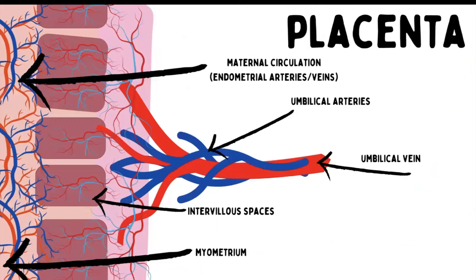Here's a quick picture of the placenta. To the left is the placenta, and you'll see the maternal circulation — the endometrial arteries and veins — which supply into the intervillous spaces. They're attached by the myometrium. That vasculature sticks or glues to the wall of the uterus, and then all of that vasculature and nutrients flow into the umbilical vein and umbilical arteries.